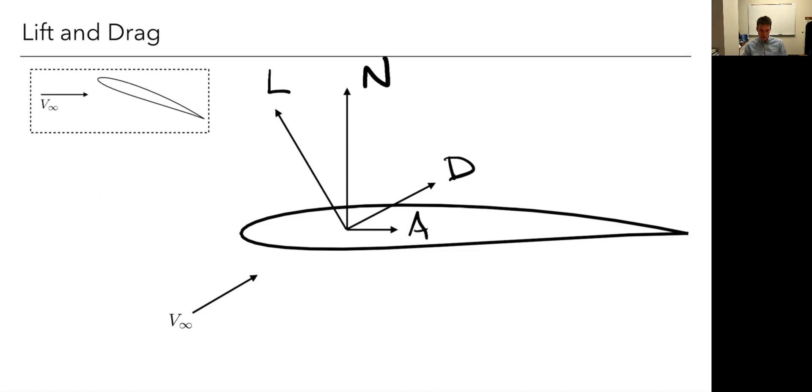We can switch from normal and axial to lift and drag. This is just a coordinate rotation. We know this angle and we can just rotate these just based on knowing the angle, which in this case would actually be the angle of attack.